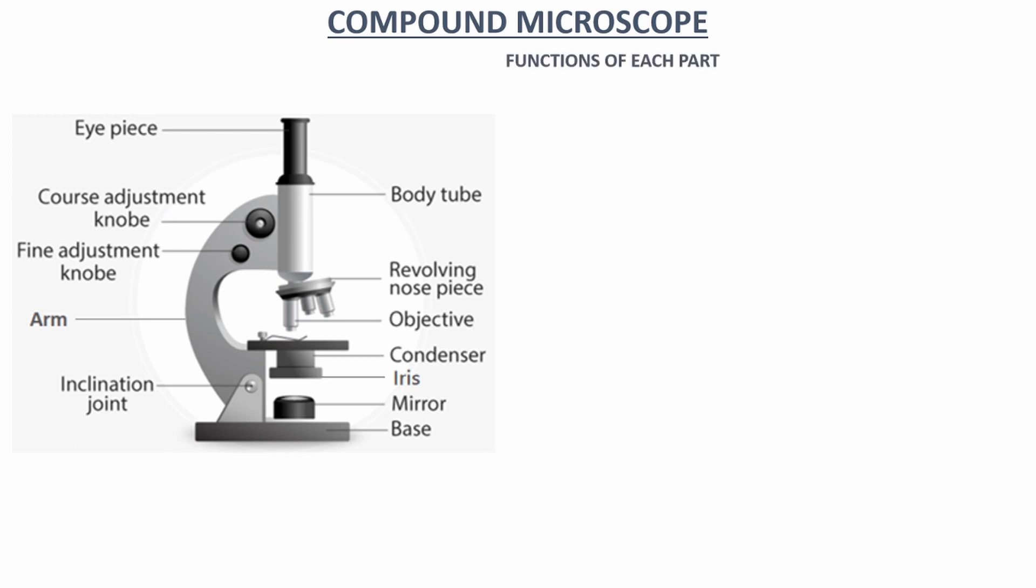Let's look at the functions of each part. The eyepiece is what you look through at the top of the microscope. The adjustment knob located on the arm of the microscope moves the stage up and down to bring the specimen into focus.